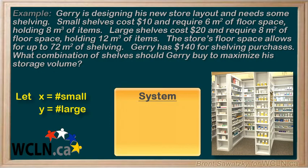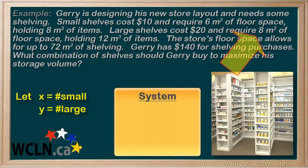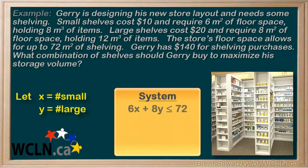First we're told about floor space. Small shelves take 6 meters squared and large shelves take 8 meters squared, and our maximum floor space is 72 meters squared. So our first inequality is 6x for the space of the small shelves plus 8y for the space of the large shelves, and that all has to add up to be equal or less than 72 meters squared.